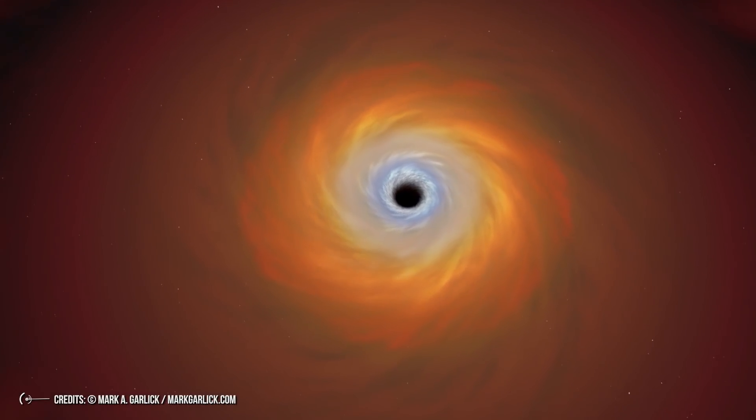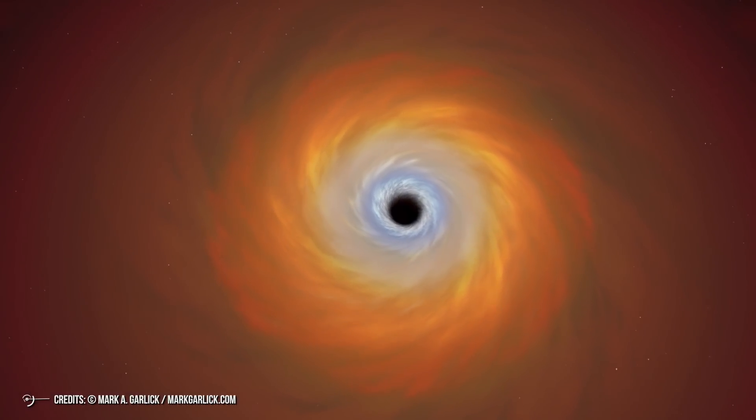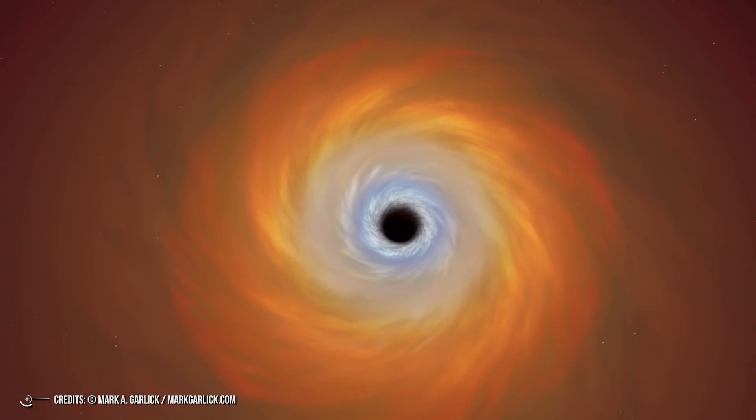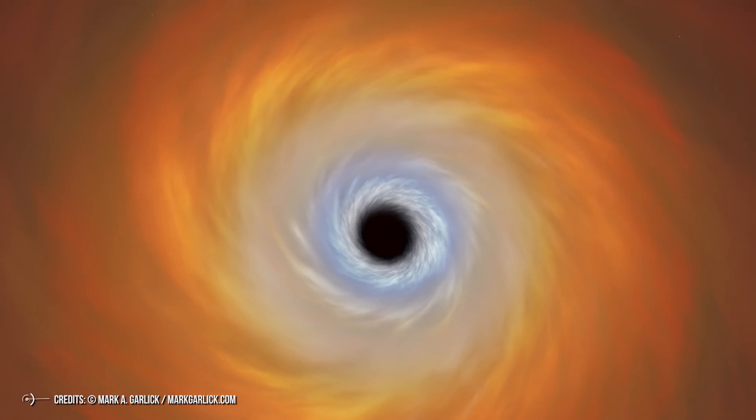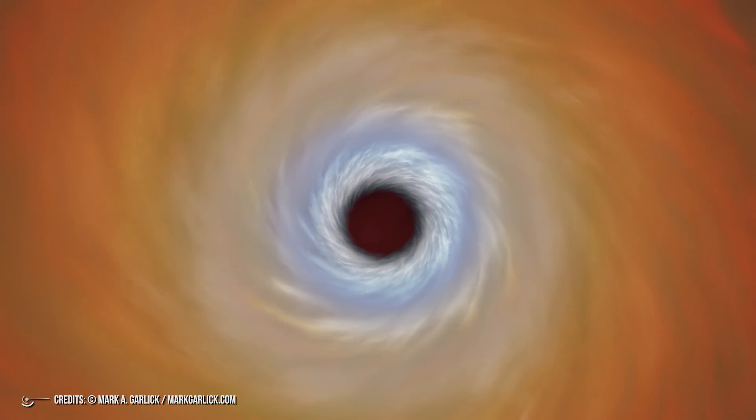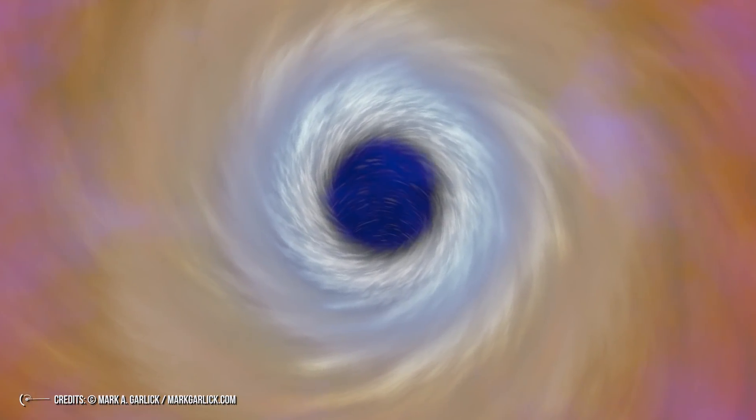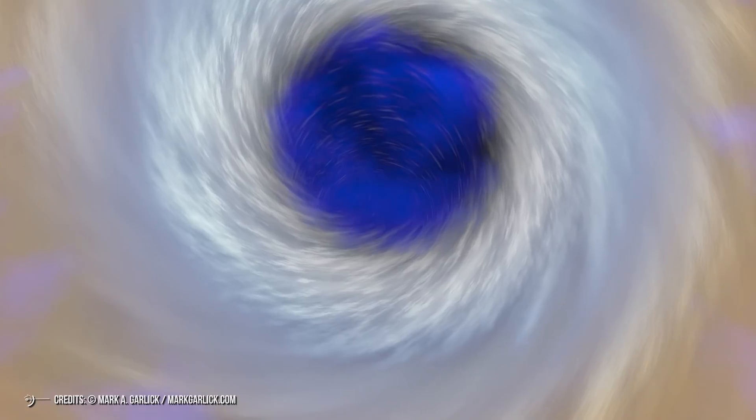Wormholes were first theorized in 1916, though that wasn't what they were called at the time. What happened is that an Australian physicist called Ludwig Flam found a solution to Einstein's equations of general relativity theory. He called the resulting mathematical object a white hole, in contrast with the already known solution of a black hole.